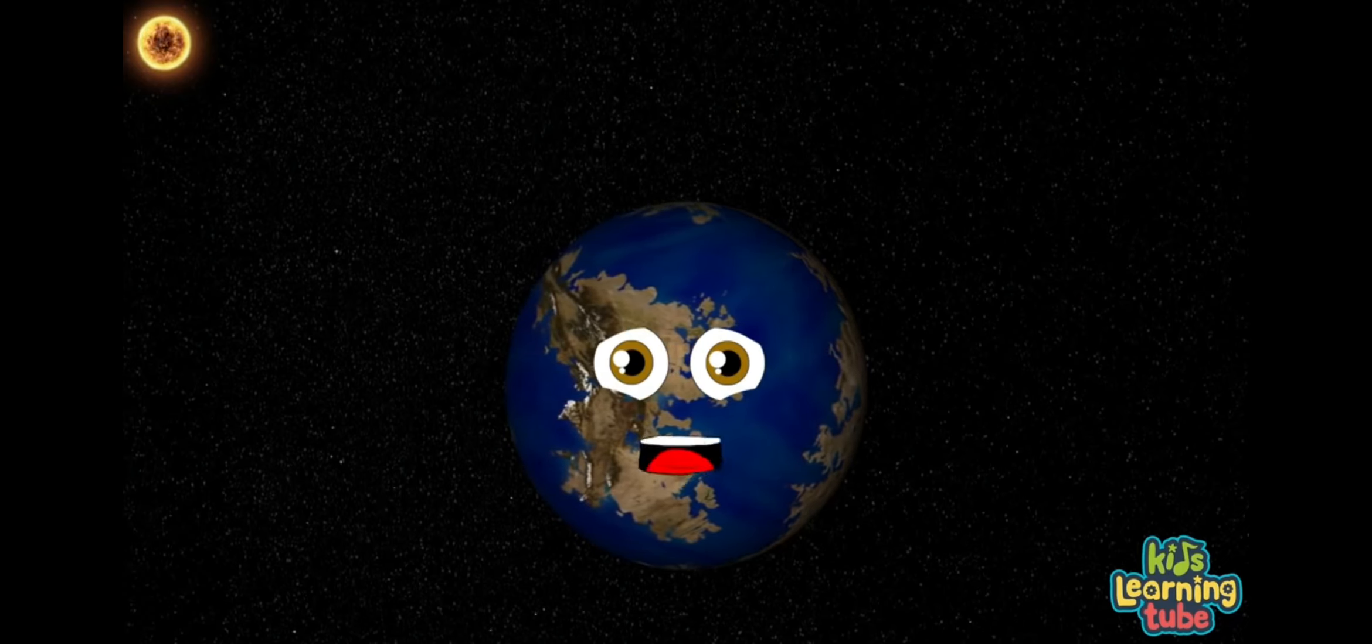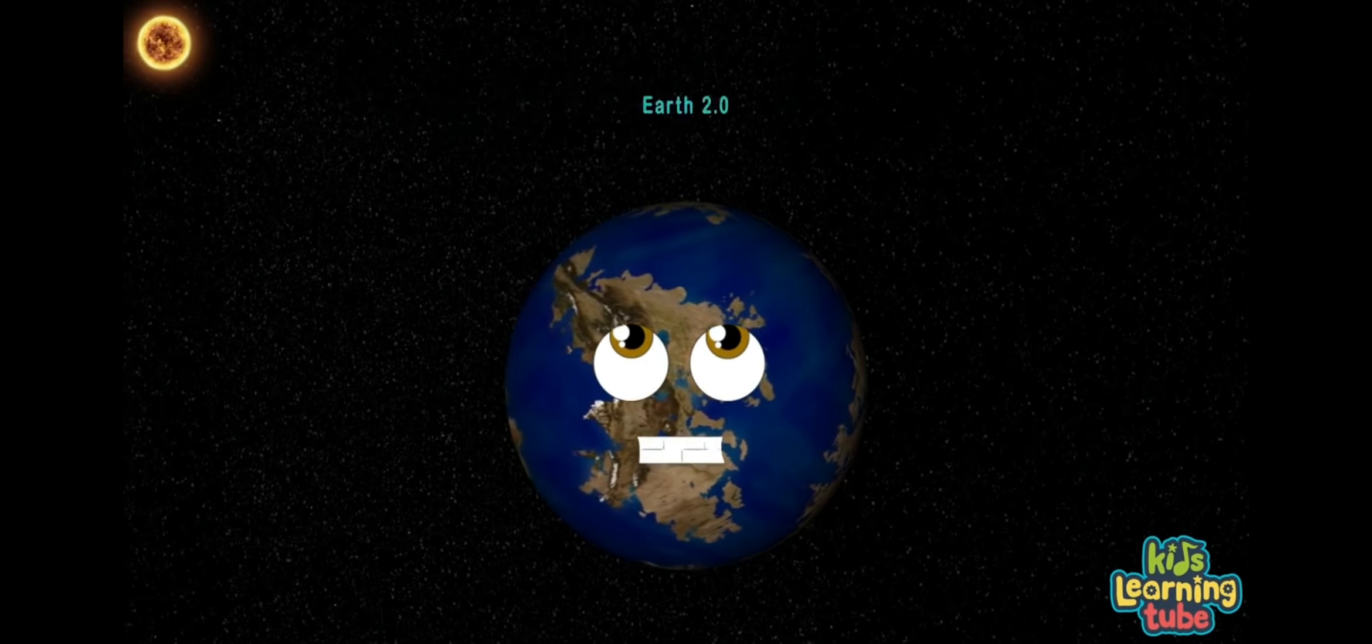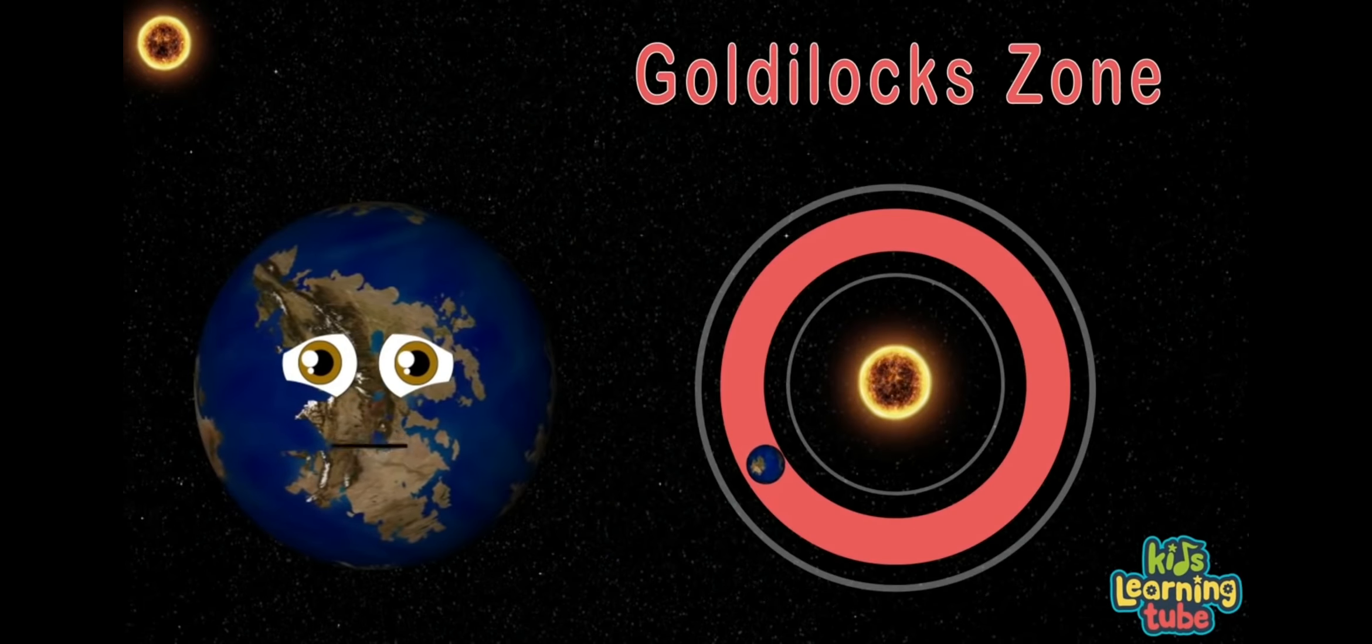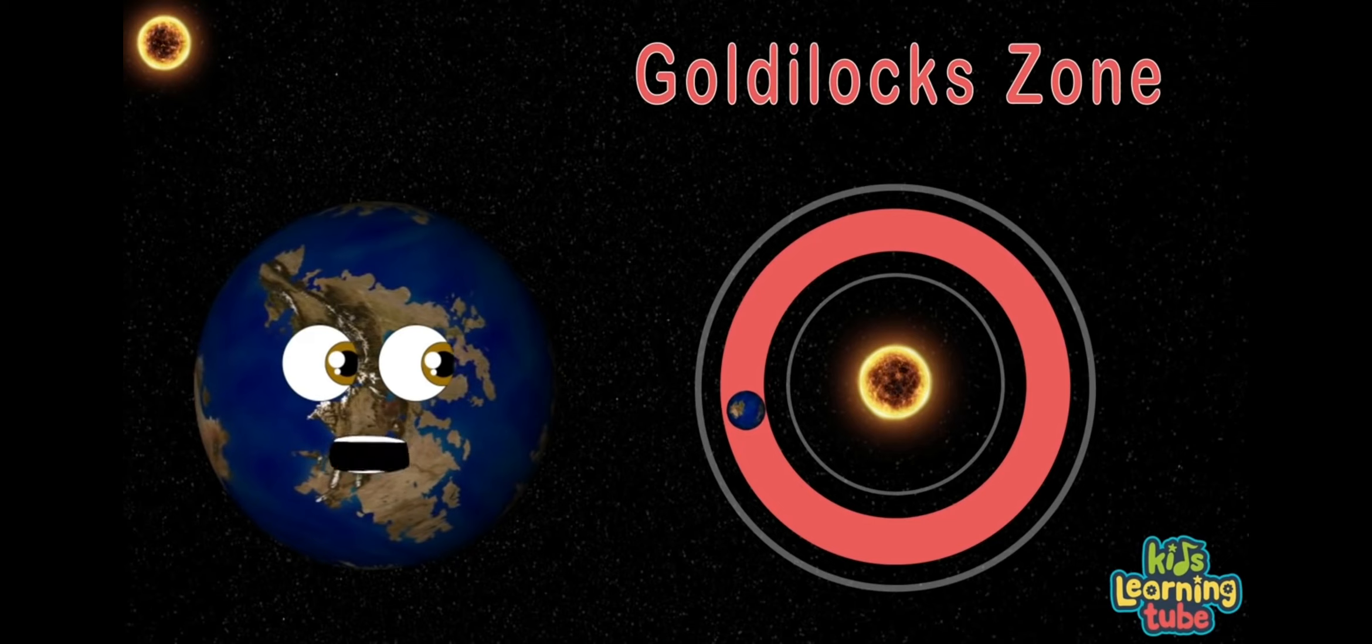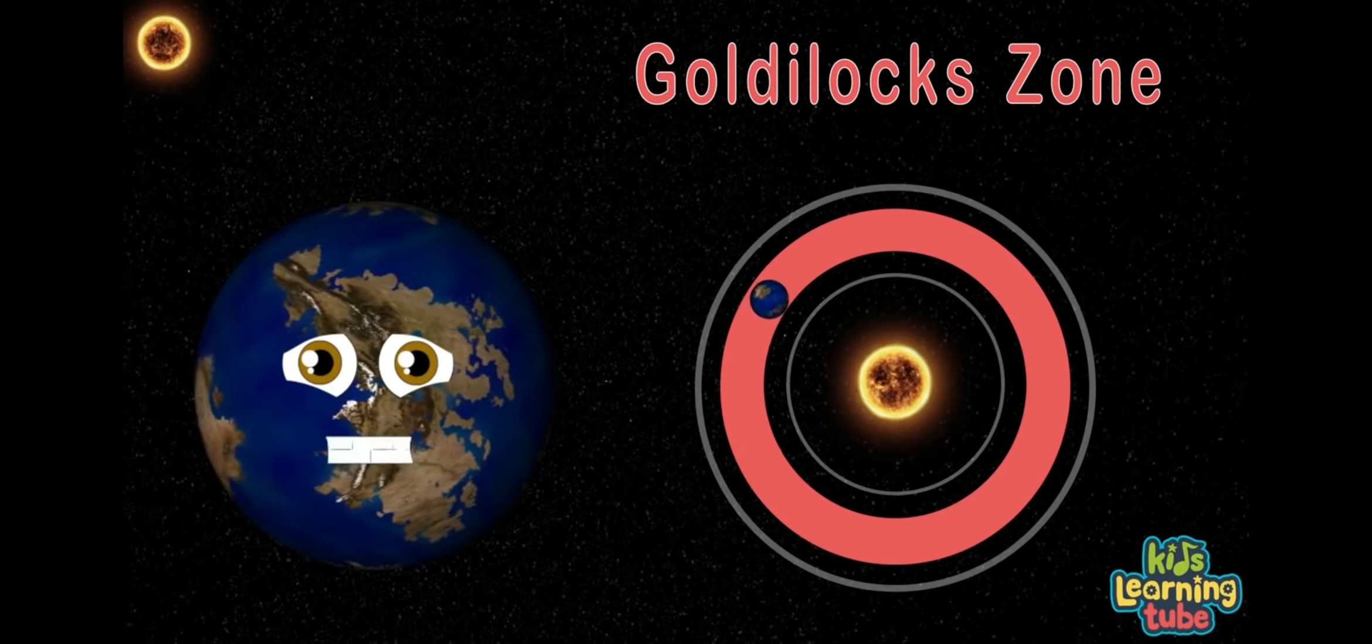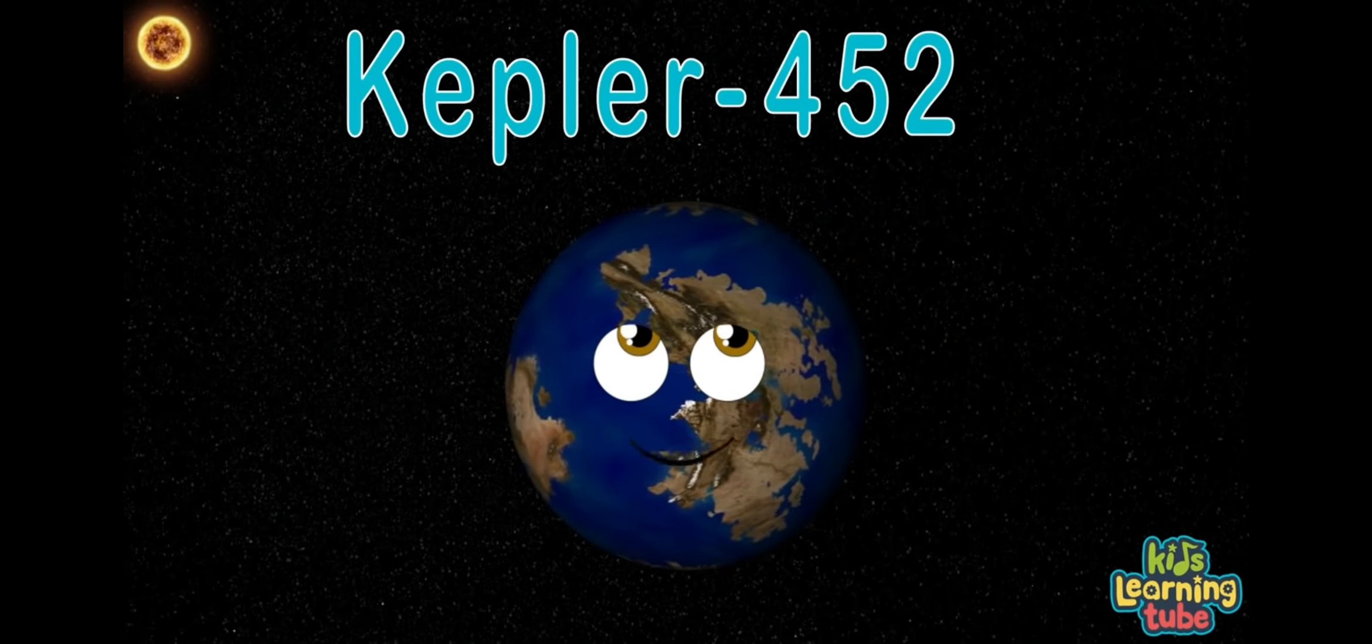My name is Kepler-452b, also known as Earth 2.0. Yeah, that's me. I may support life within the Goldilocks zone while orbiting a sunlight star like yours at home.